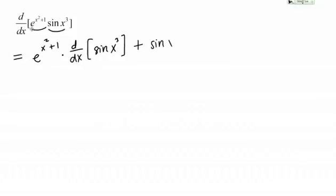Remember the product rule is first times the derivative of the second, plus second times the derivative of the first. So writing this down: I've got the first, e to the x squared plus 1, times the derivative of the second — that derivative is going to be a little complicated, so I'm just going to leave it for now. We want to take things one step at a time. Plus the second, sine of x cubed, times the derivative of the first, e to the x squared plus 1.